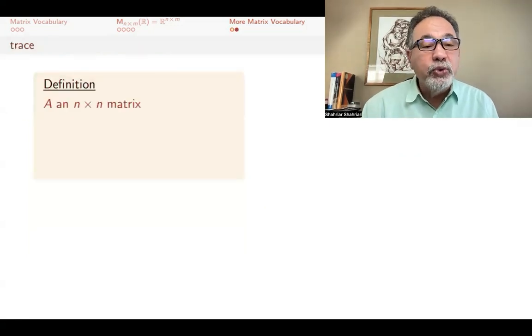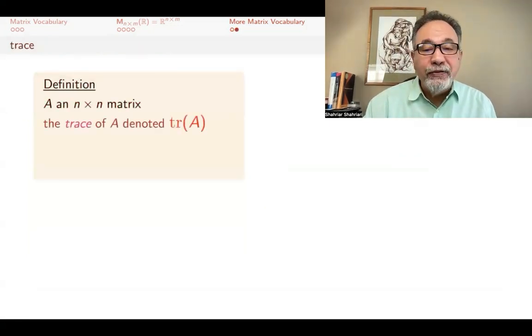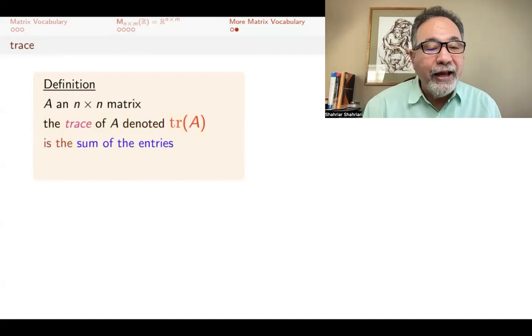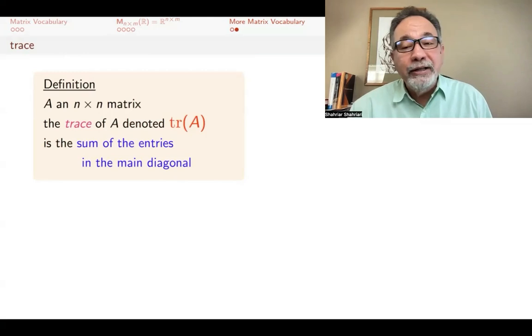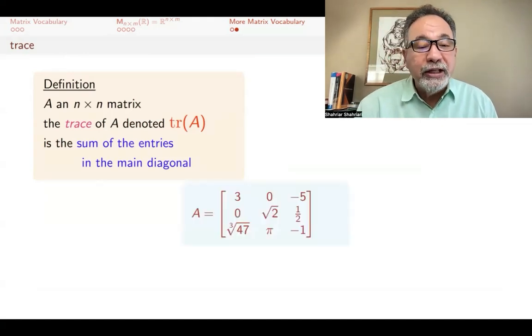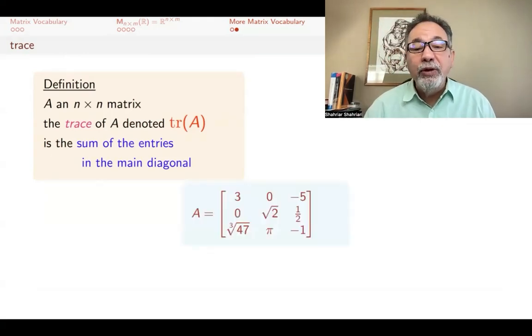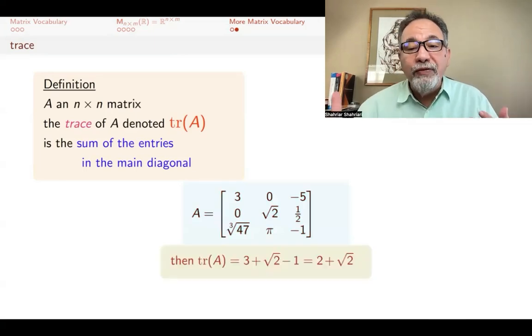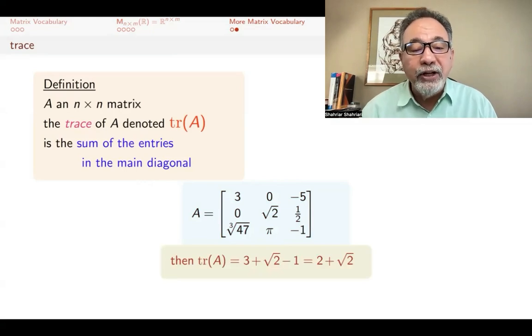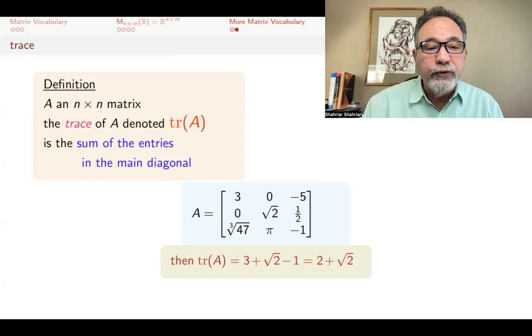One final definition: if you have a square matrix, then the trace of A, which we denote by tr(A), is the sum of the entries in the main diagonal. You might wonder what this is good for, but it turns out to be a lot more interesting than you might first expect. Here's a three by three square matrix, and its trace is going to be the sum of the diagonal elements. You ignore everything else, just on the diagonal, whatever it is, you add them. Here, 3 + √2 - 1, and you get 2 + √2.